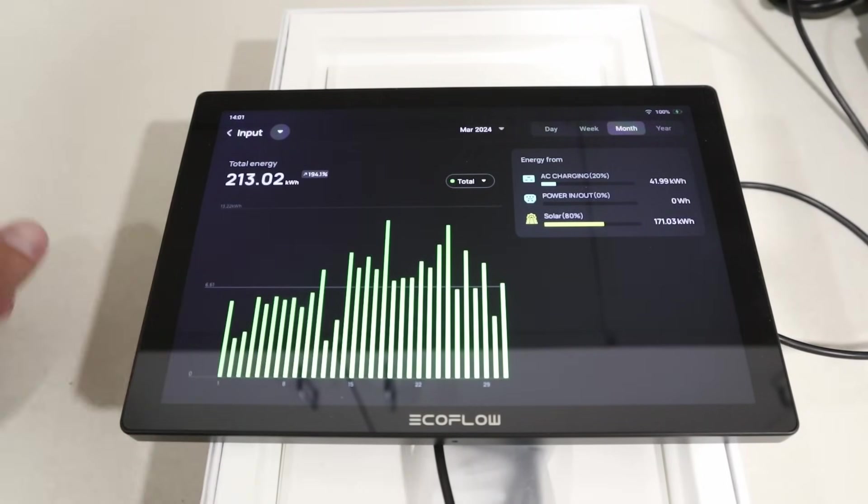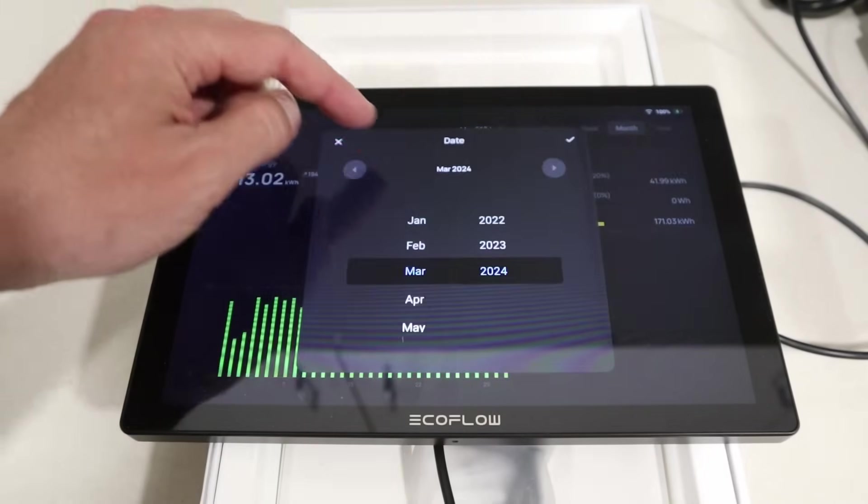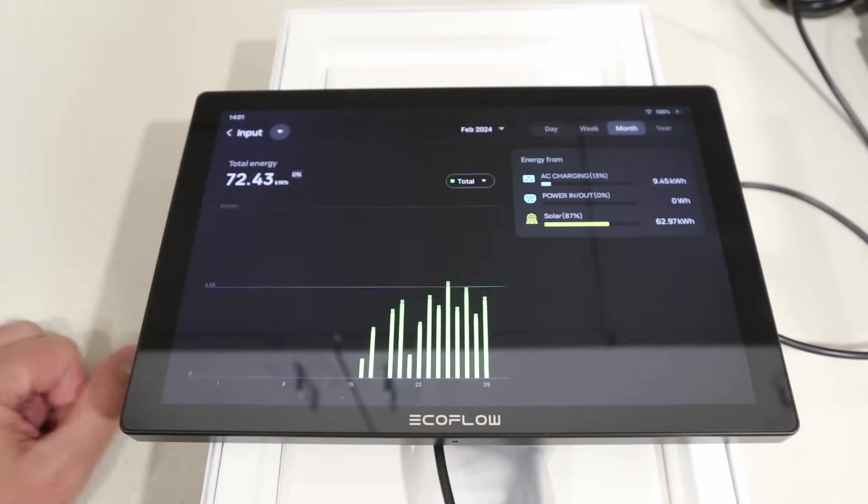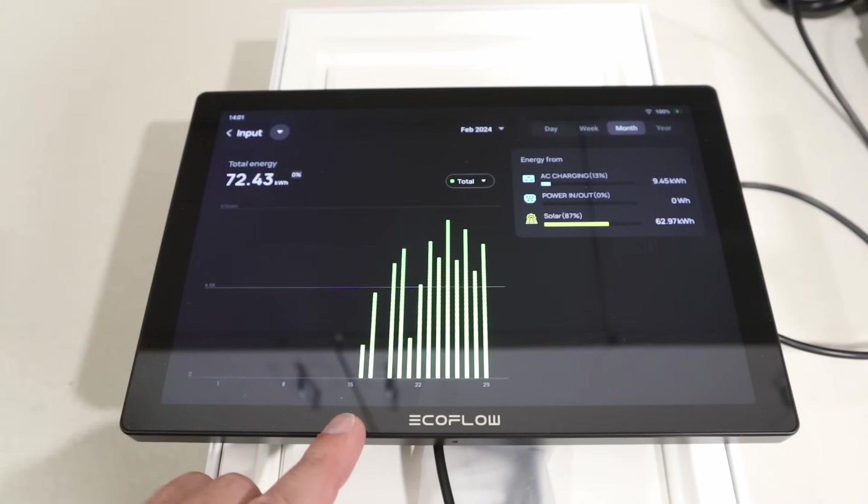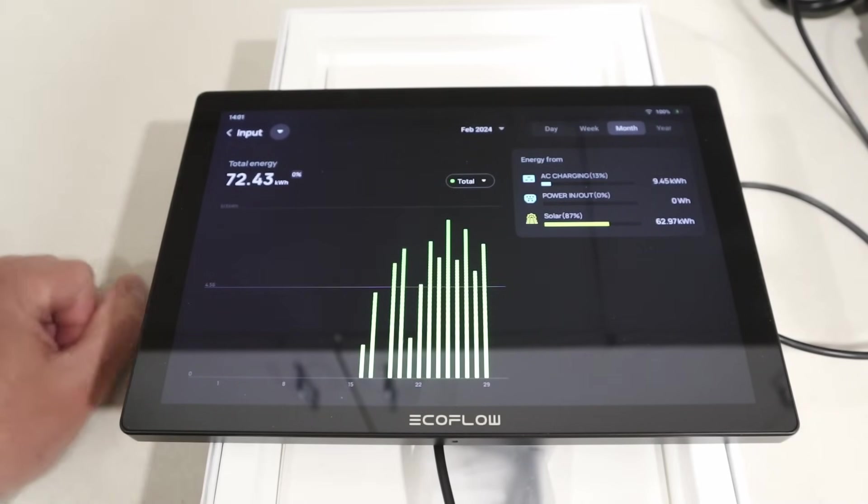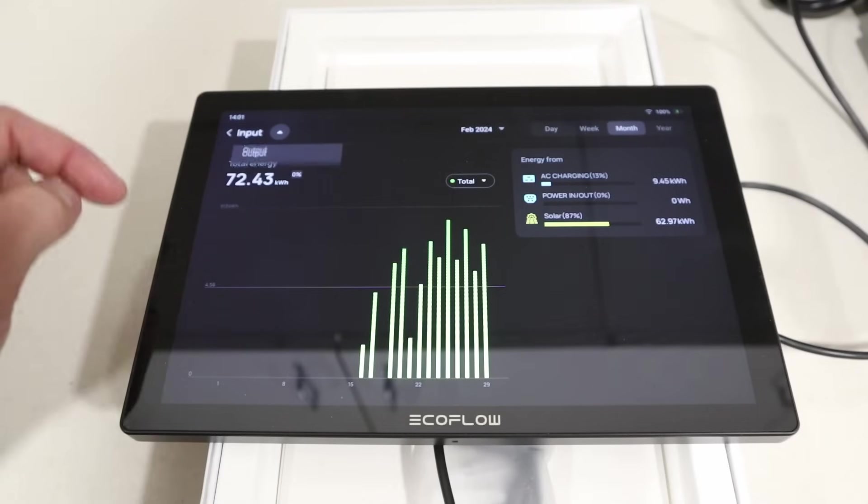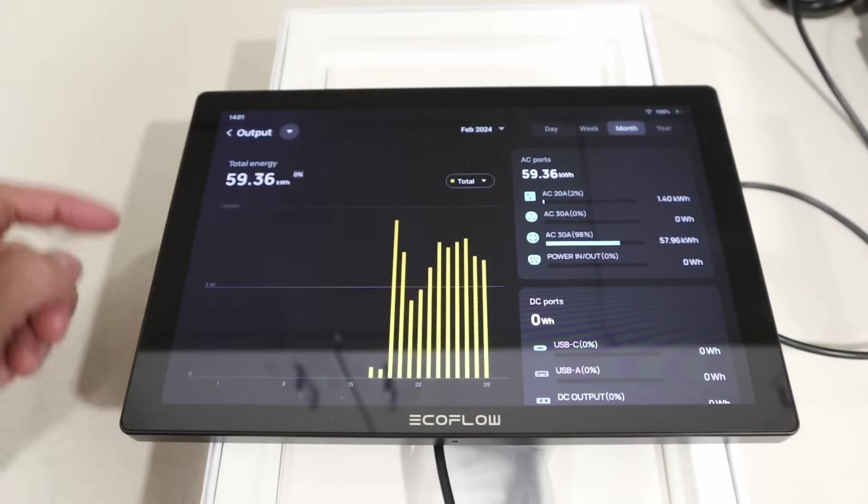Looking back in March, the sun was not nearly out as much as it is now. And if we go look at February, we're going to see the same thing. The days were shorter. I did start using this mid-February every single day. And for February, it's 72.43 kilowatt hours from solar and 59 kilowatt hours going out from the battery.